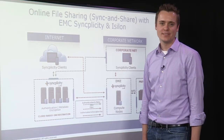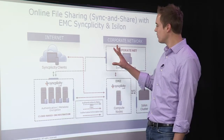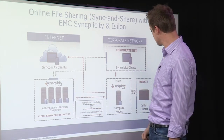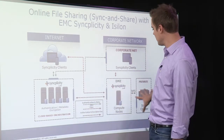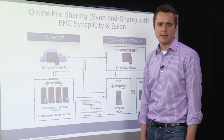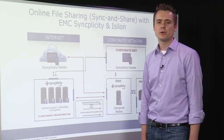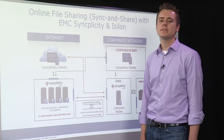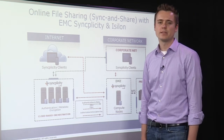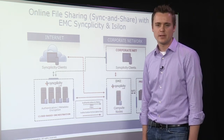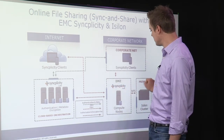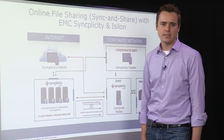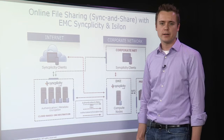At a high level, the Syncplicity system comprises four distinct components: clients, orchestration, compute, and storage. The last three make up the Syncplicity backend, and the last two — storage and compute — are the portions of the backend that are now hostable on-premise. In the current SaaS-only deployment, all three backend components are hosted and managed by Syncplicity in the cloud. In an on-premise deployment, storage and compute transition into your data center and are hosted and managed by your team. Let's quickly talk about each backend component to better understand its role.